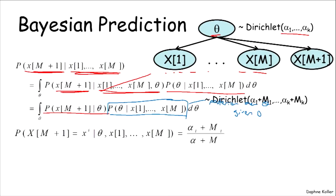which is simply the fraction of the alpha, the fraction of the hyperparameter corresponding to the outcome xi as a fraction of all of the sum of all the hyperparameters.